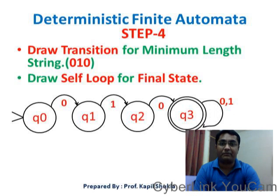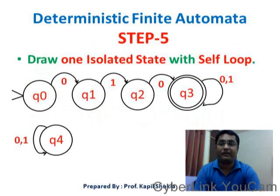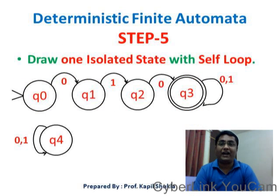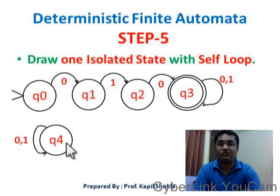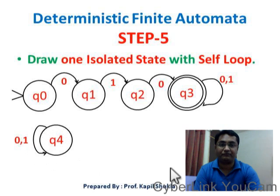Step 5: draw one isolated state with a self loop. Here Q4 is the isolated dead state and there is a self loop for 0 and 1 on it.